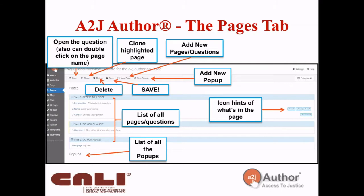The next tab, where you'll spend the majority of your time, is the Pages tab. For purposes of A to J, a page and a question are essentially the same thing, though not every page has a question — some are just introductory or informational screens. On the Pages tab, you can open questions, double-click on them, clone existing questions, and delete pages. A particularly useful feature is cloning — for example, if you have an address field set up exactly how you want it and need to use it again for a spouse's address, you can clone that existing page.